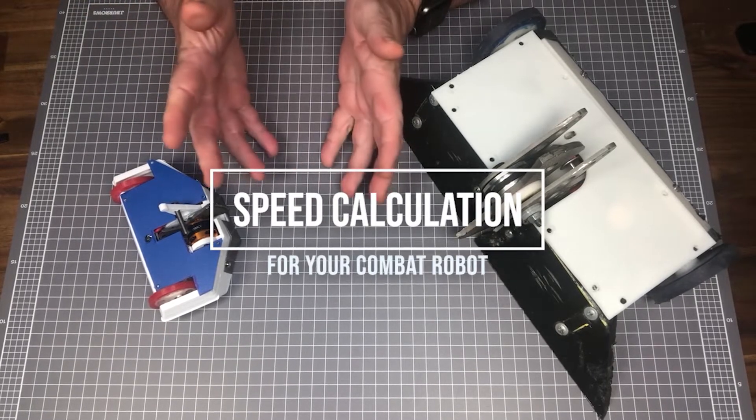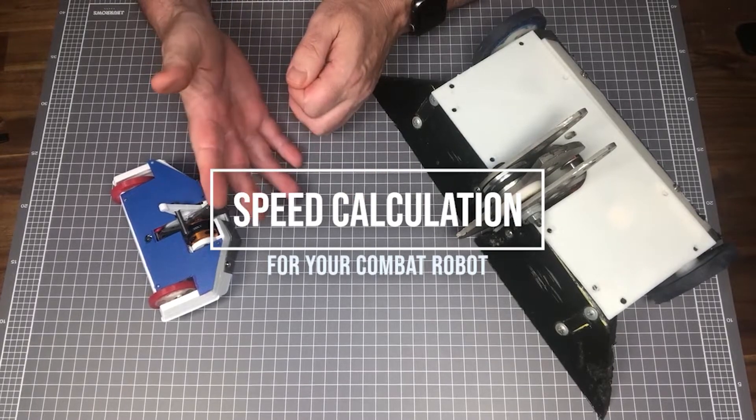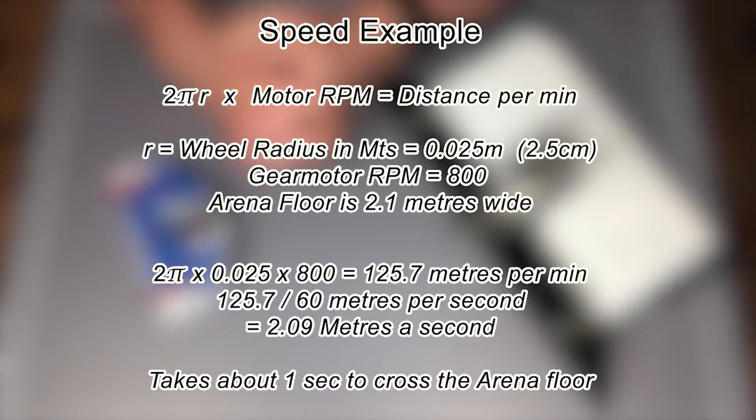For those excited about a bit of math, here is an example for calculating the bot speed. I won't go into this example, but feel free to pause it to have a closer look. The calculations are for a beetle weight and uses a gear motor that is rated to 800 RPM at 12 volts. In this example, the final speed works out to be around 2 meters a second. For our local league, the arena is 2.1 meters across, so this would mean that the robot would get from one side of the arena to the other in roughly one second. Which is pretty quick and would need some solid driving experience.